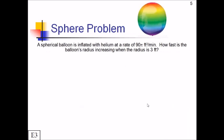We'll do one more for this lesson. A spherical balloon, a very pretty one, is inflated with helium at a rate of 90 pi cubic feet per minute. How fast is the balloon's radius increasing when the radius is 3 feet? So pause the video, come up with a formula, impdiff, and see how the rest of it goes.